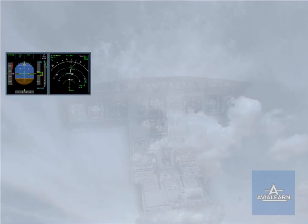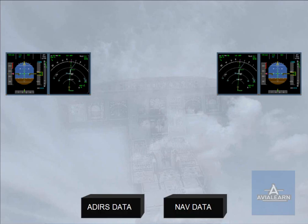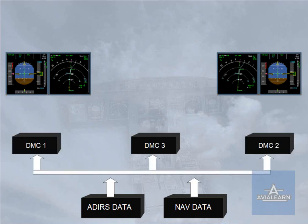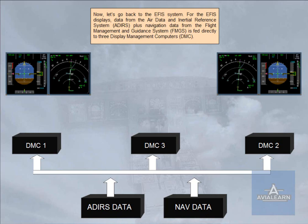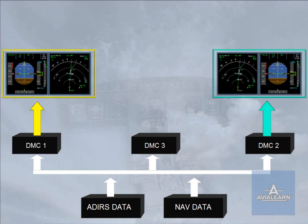Now let's go back to the EFIS system. For the EFIS displays, data from the Air Data and Inertial Reference System, ADIRS, plus navigation data from the Flight Management and Guidance System, FMGS, is fed directly to three Display Management Computers, DMC. The three identical DMCs process the data and generate the images to be displayed. In normal operation, DMC-1 supplies EFIS information to the captain's PFD and ND, DMC-2 supplies the first officer's PFD and ND, and DMC-3 is available as a backup.